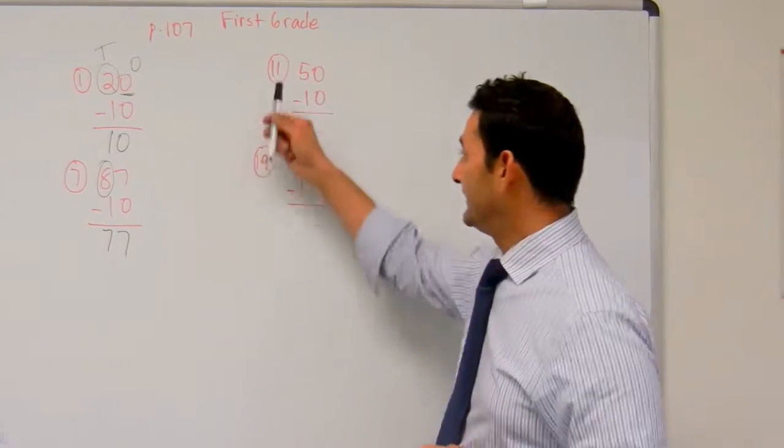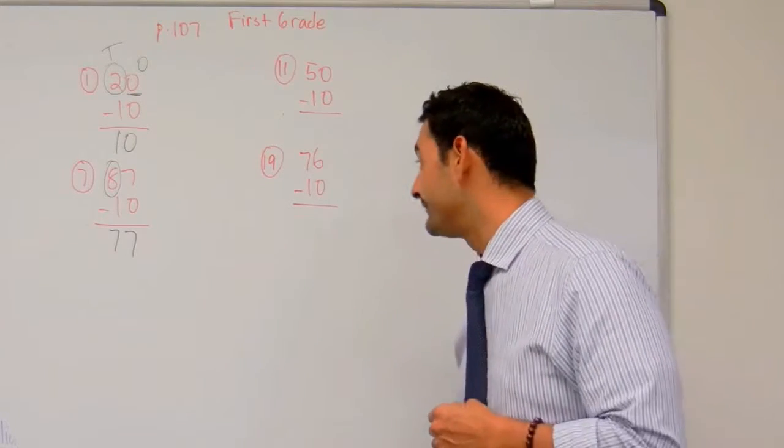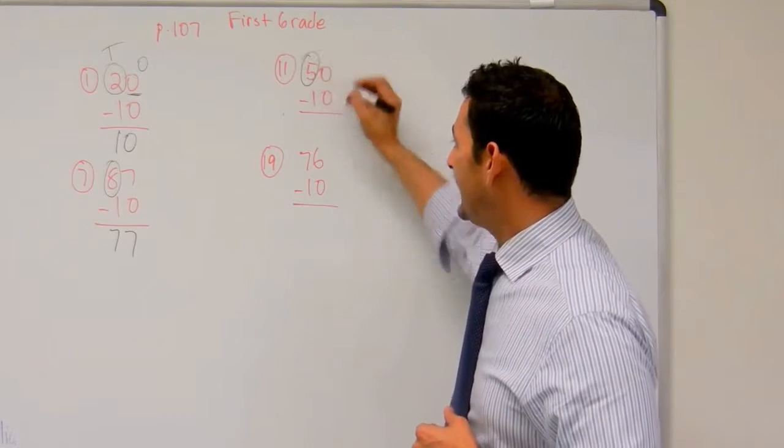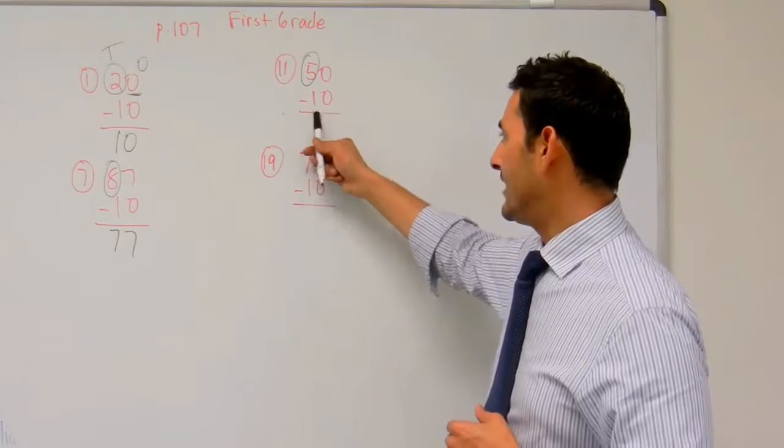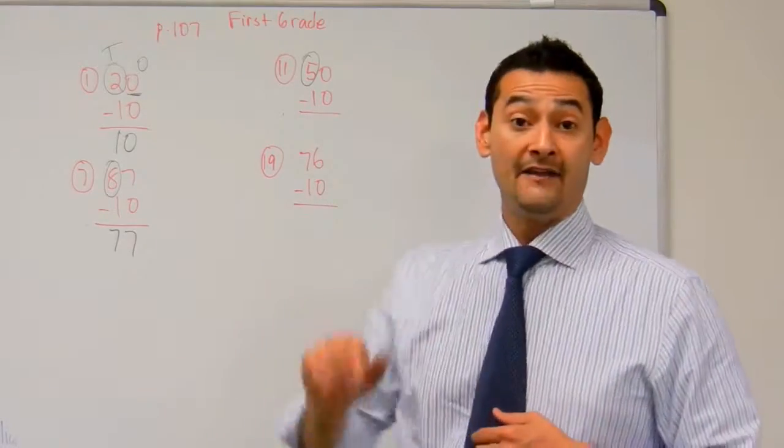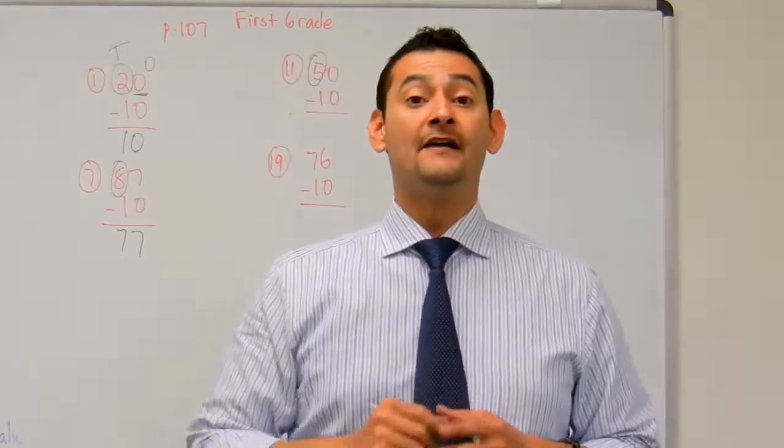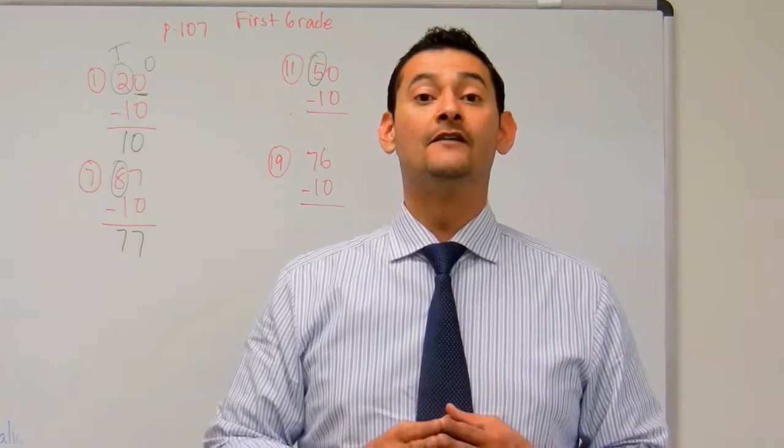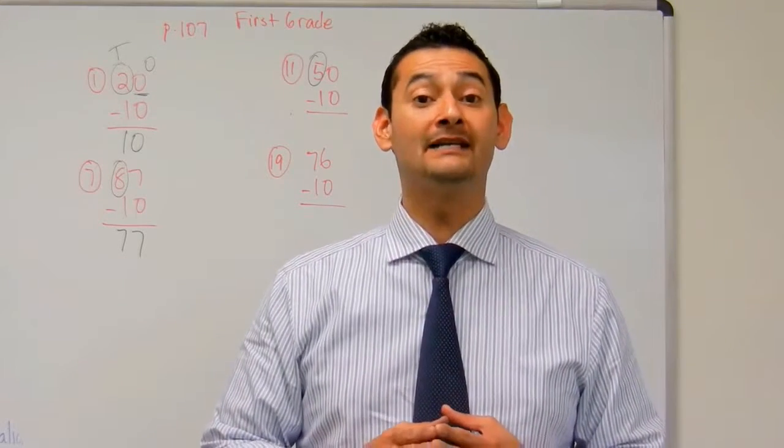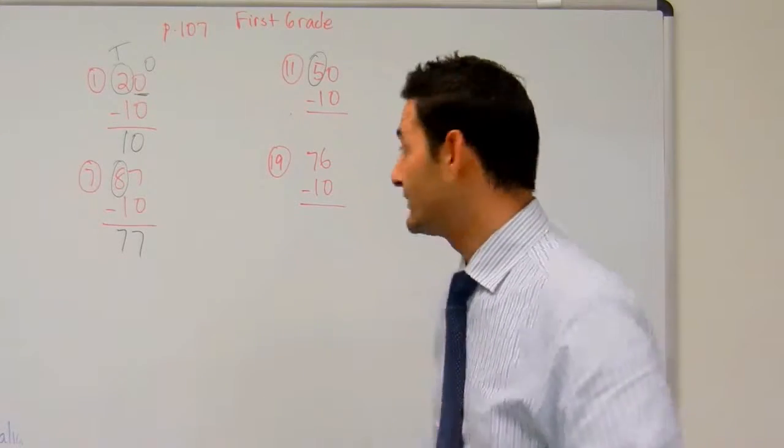Now let's take a look at number eleven. Here we have fifty minus ten. The tens place is going to change. We're going to subtract that by one. So if I have five, it will become four. Fifty minus ten equals forty. Fifty minus ten equals forty, four zero.